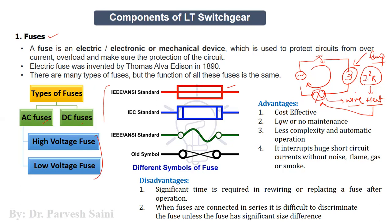The fuse trips the circuit automatically from the main supply and disconnects the lamp, hence protecting it from transients. When it trips and disconnects the load from the main supply, it doesn't make any noise, there is no smoke and no flame — so it is safe in that way as well.